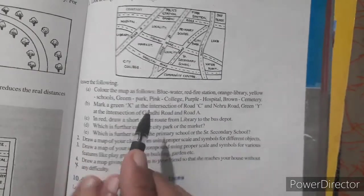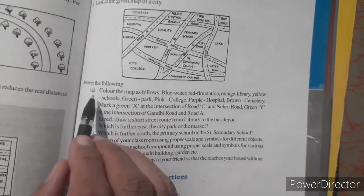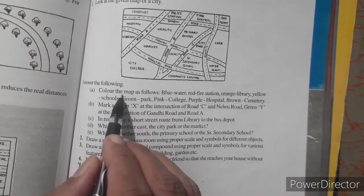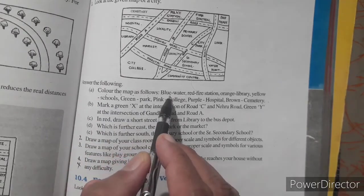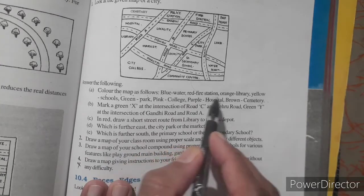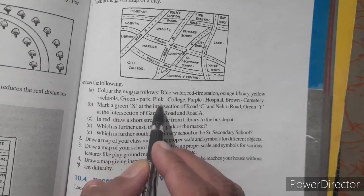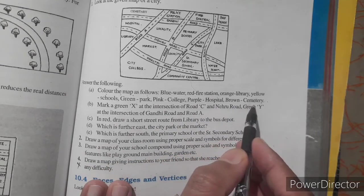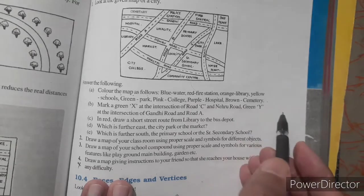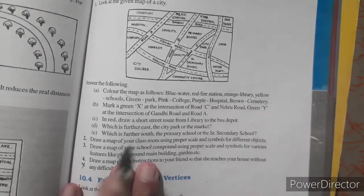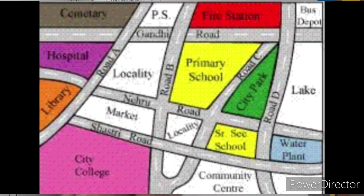And answer the following. In that first question, color the map as follows: blue water, red fire station, orange library, yellow school, green park, pink college, purple hospital, brown cemetery. So here I already show you the color image.